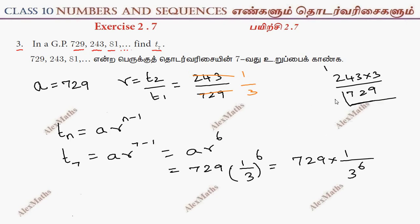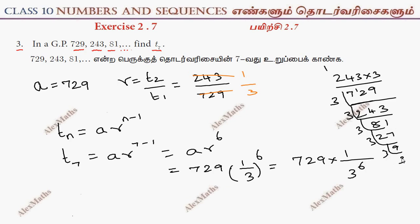Now we compute 729 × (1/3)^6. Factorizing 729: 729 ÷ 3 = 243, ÷ 3 = 81, ÷ 3 = 27, ÷ 3 = 9, ÷ 3 = 3, ÷ 3 = 1. So 729 is 3^6. Therefore 3^6 × (1/3)^6 cancels out to give 1.